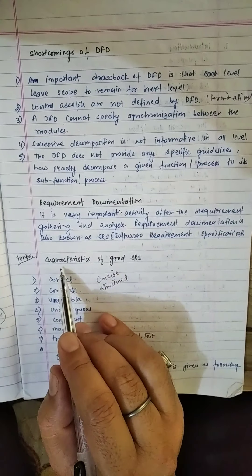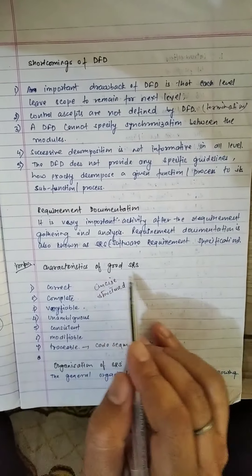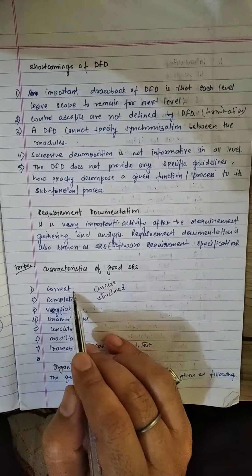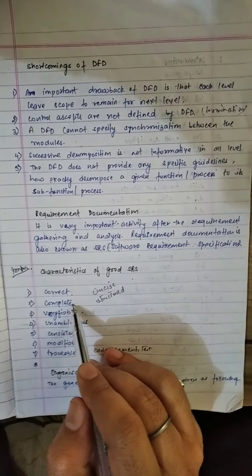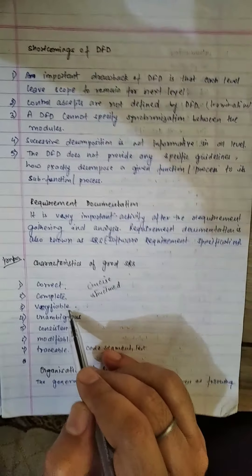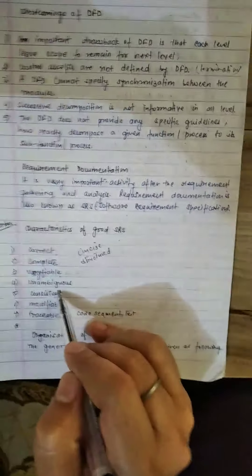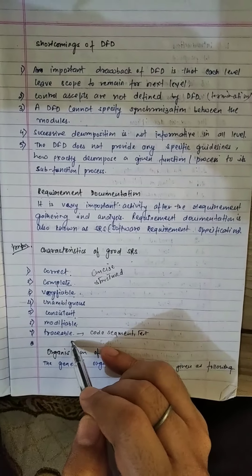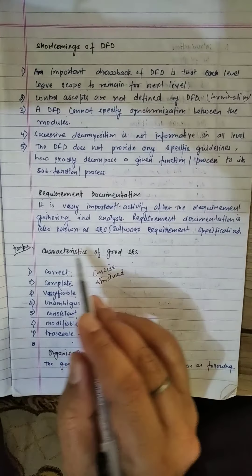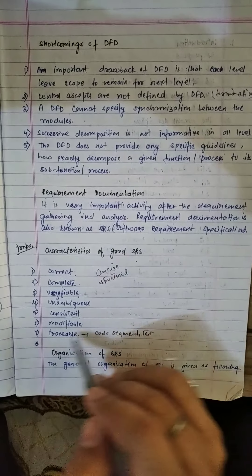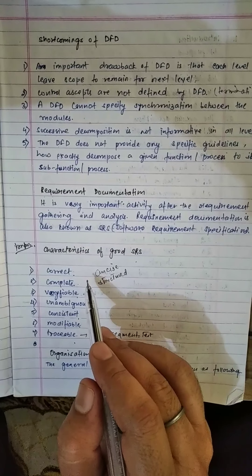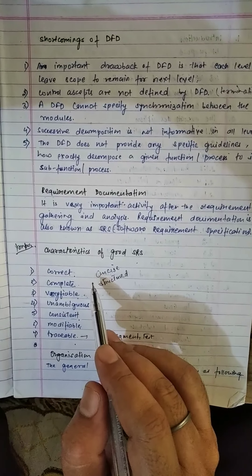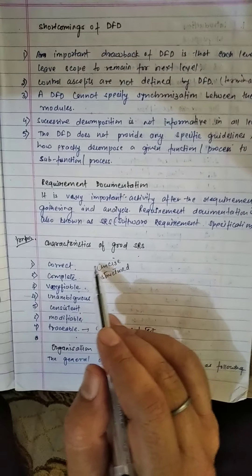I am going to explain the characteristics of a good SRS. It should be correct, complete, verifiable, unambiguous, consistent, modifiable, and traceable. These characteristics are very important in the context of the end semester examination, so prepare them carefully.